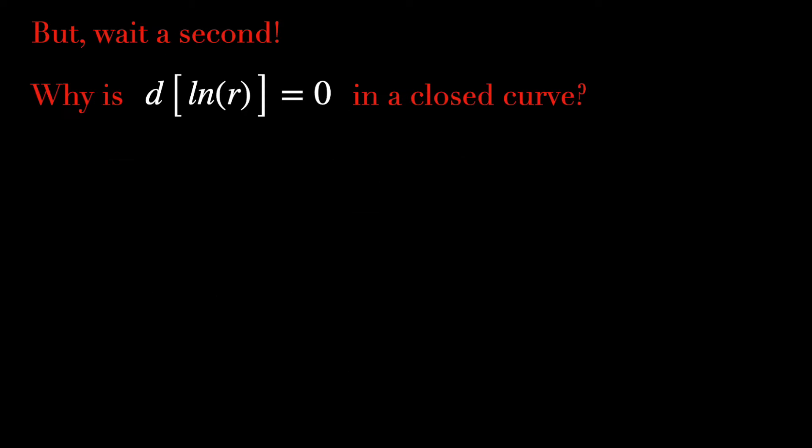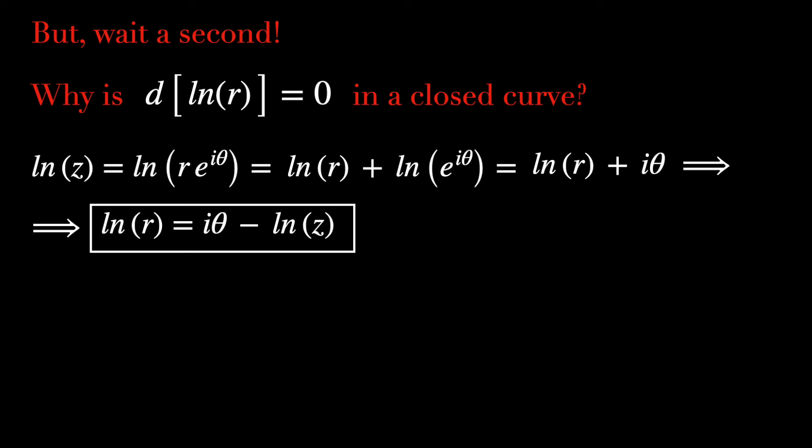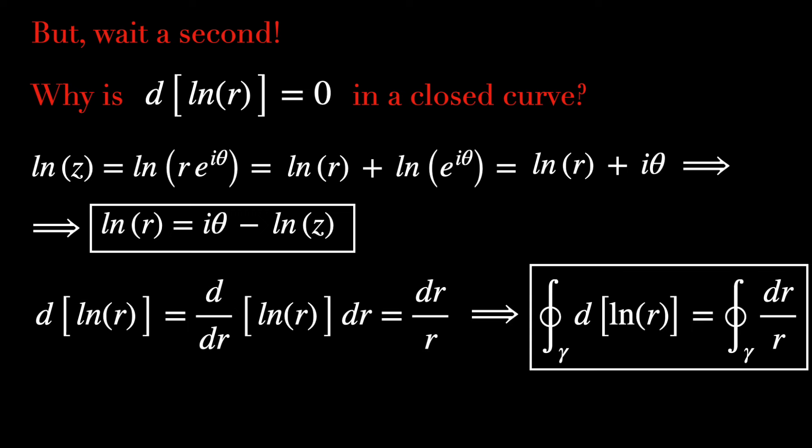But wait a second, why is it true that d(ln r) is 0 in a closed curve? We can see this by the following. ln of a point z when written in polar coordinates is this. Now we can use the property of logarithm to break this into two different logarithms. The second term is just iθ. And this implies that we found out that ln(r) = iθ - ln(z).